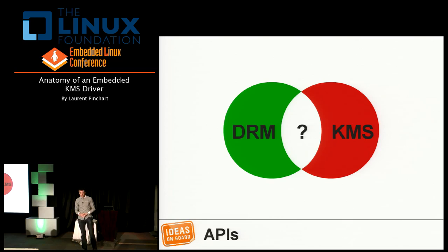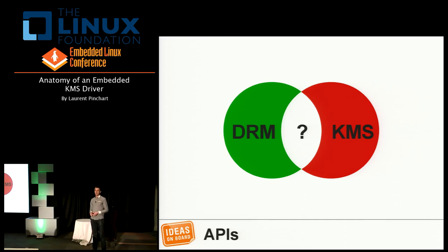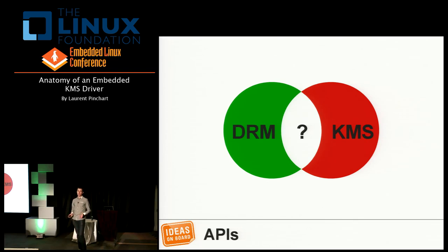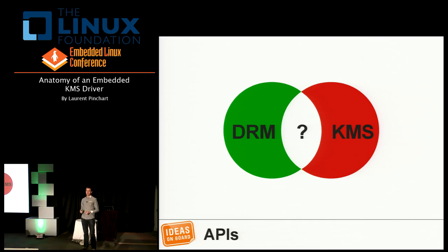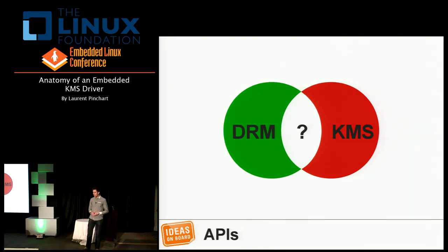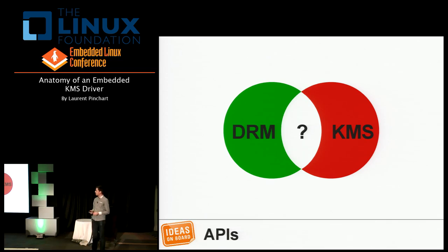DRM is the Direct Rendering Manager. That's a kernel-to-userspace API and kernel infrastructure that started as a project to support GPUs in Linux — mostly for 3D acceleration — and we needed an API to expose that to userspace. We already had the FBDev API on the kernel side to expose the display capabilities of the hardware, but for 3D acceleration we needed something new to manage buffers, memory, command queues, and synchronization. KMS stands for Kernel Mode Setting.